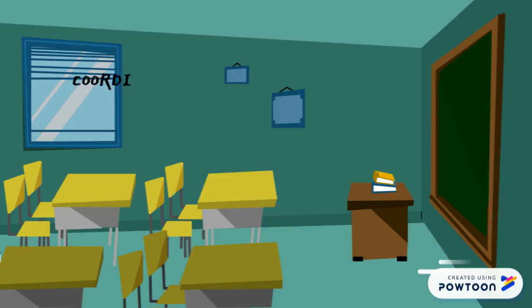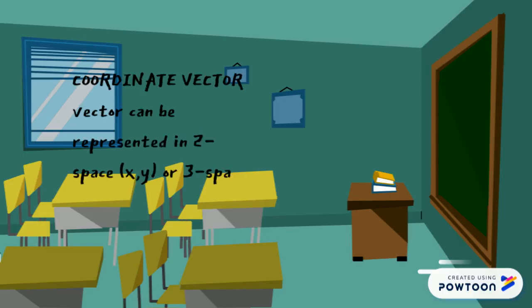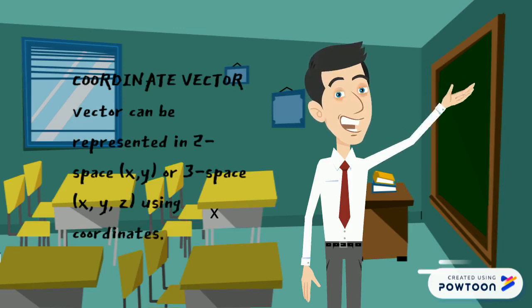Okay, let's learn about coordinate vector. Vectors can be represented in 2-space (X and Y) or 3-space (X, Y, and Z) using coordinates.